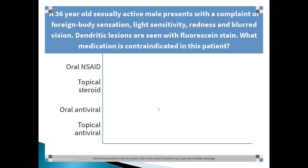Test question: A 36-year-old sexually active male presents with foreign body sensation, light sensitivity, redness, blurred vision, and dendritic lesions seen on fluorescein stain. What medication is contraindicated in this patient? If you said topical steroids, you are absolutely correct. We don't want to give someone with a dendritic lesion — indicating herpes simplex virus — topical steroids.